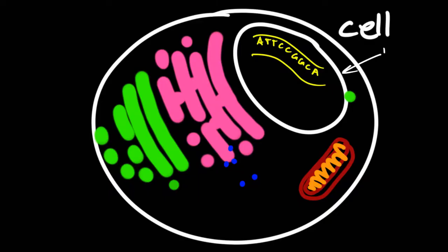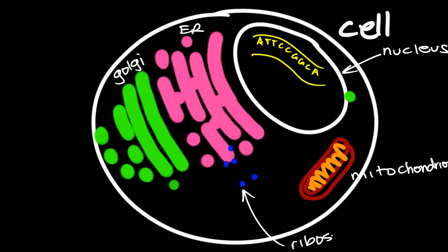We know that our cells have compartments and structures called organelles such as the nucleus, the mitochondria, the endoplasmic reticulum, and the Golgi. We also have ribosomes in our cells that can build new proteins.